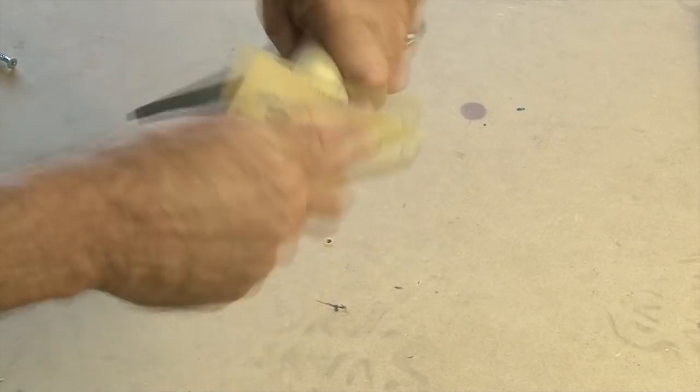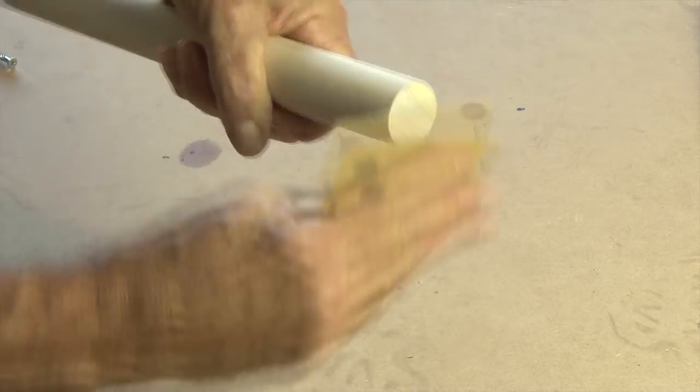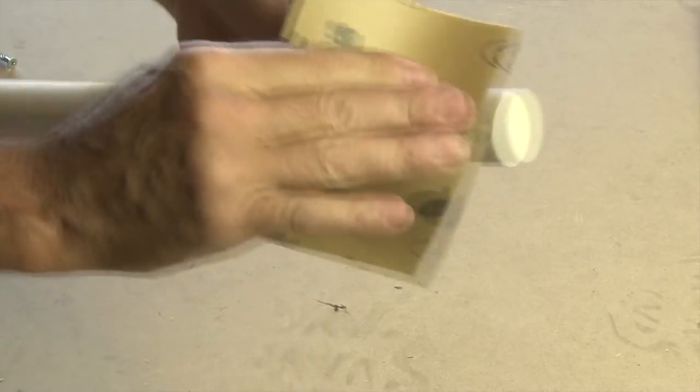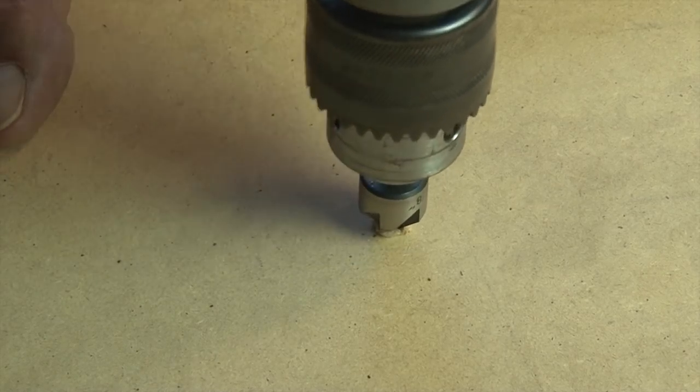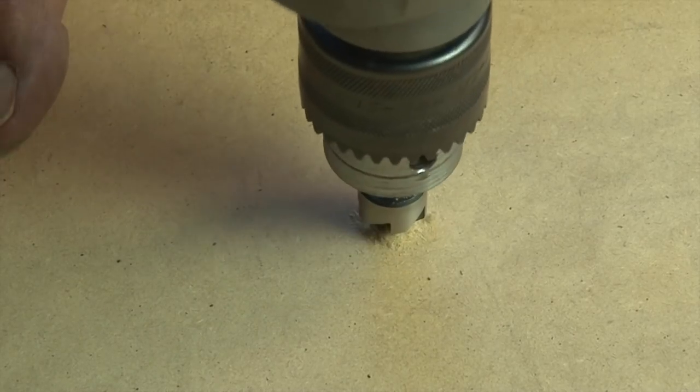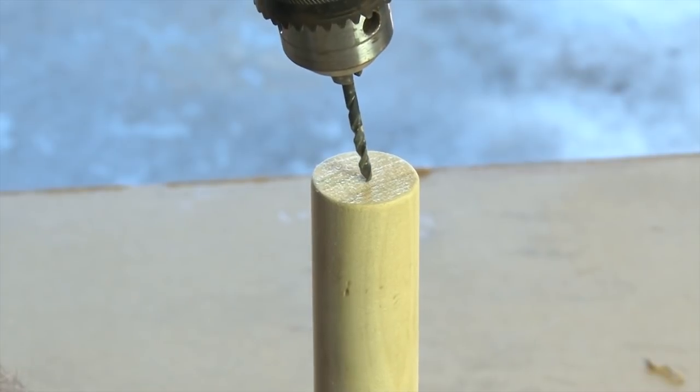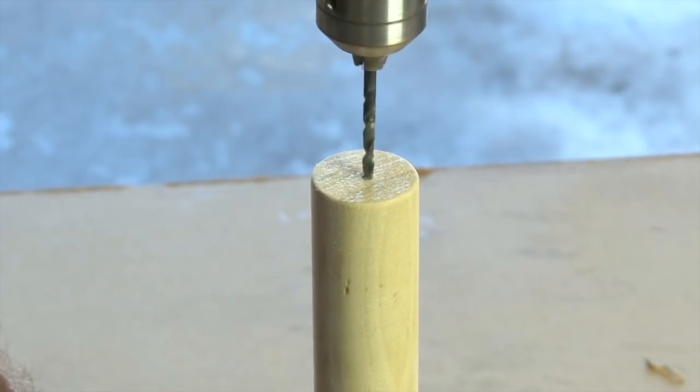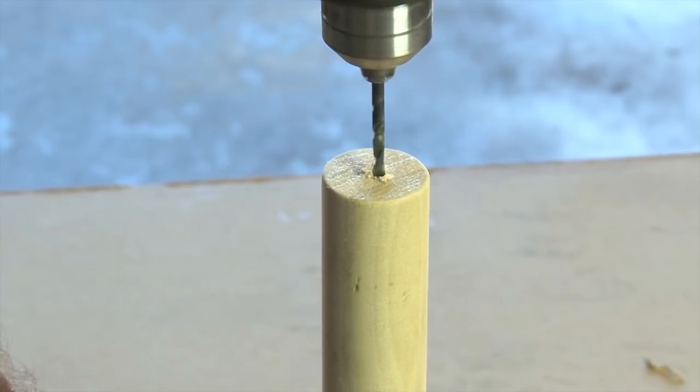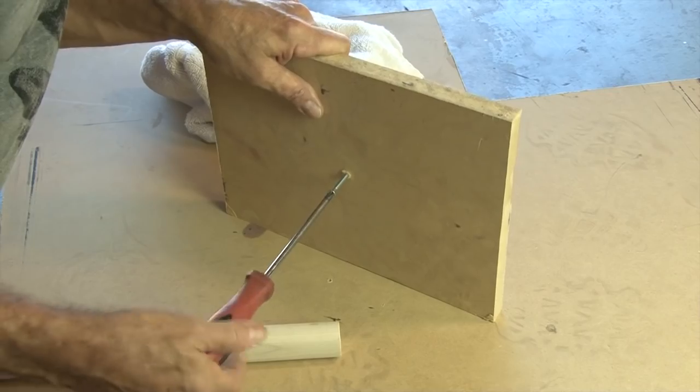I'll go ahead and sand the bottom support now because we're getting ready to assemble it and I won't be able to get all those edges once it's put together. Now I'm going to countersink this hole because the wood screw I'm using has an oval head and I'm going to want that to sit flush with the piece of wood. Then I'll take that same drill bit, which by the way is a little bit smaller in diameter than the wood screw I'm going to be using, and drill right in the center of that dowel.